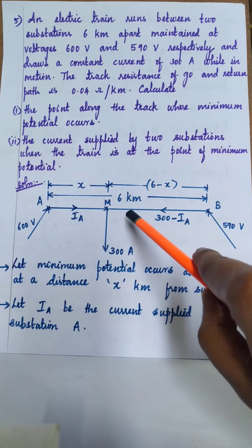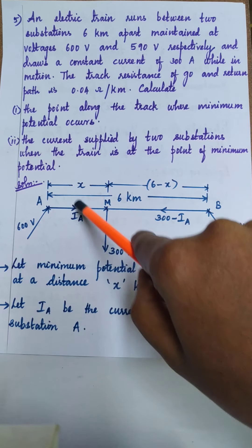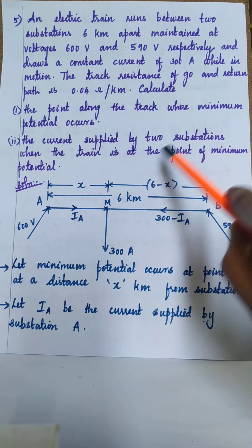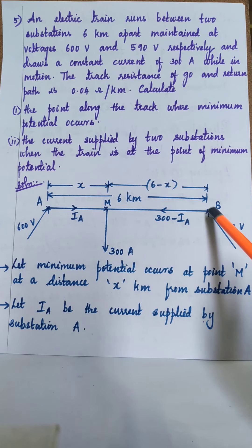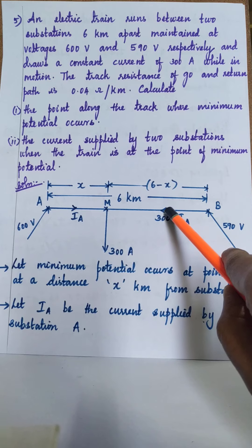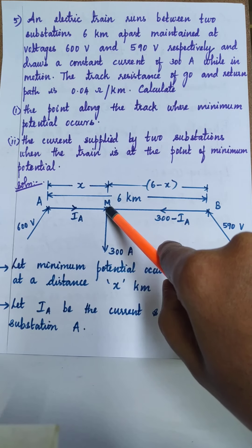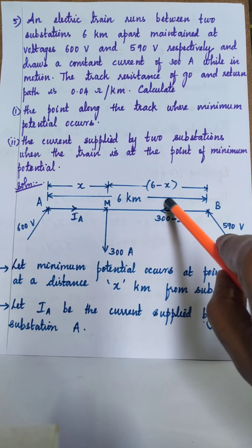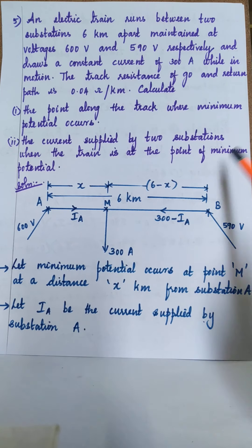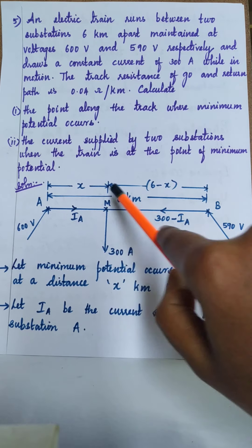The train draws a constant current of 300 amperes, so at point M it also draws 300 amperes. Let Ia be the current supplied by substation A, so 300 minus Ia will be the current supplied by substation B. The current direction from B is taken as 300 minus Ia — if taken along the other direction it would be Ia minus 300, but since it is current supplied from B, we use 300 minus Ia.